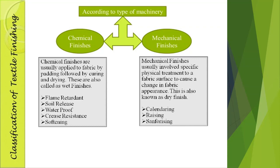In the padding process, the chemical liquid is taken in a vessel or container. The fabric is immersed in it — that is known as padding. Curing means steaming is applied to the chemically treated fabric so that the chemicals react with the fabric, and finally drying is done. This process sequence — padding, curing, drying — is a standard process for chemical finishing. Some examples of chemical finishes are flame retardant, soil release, waterproof, crease resistance, and softening.